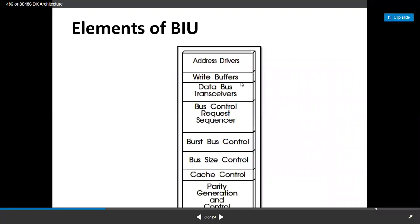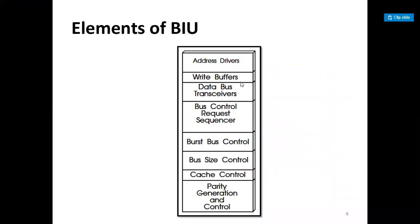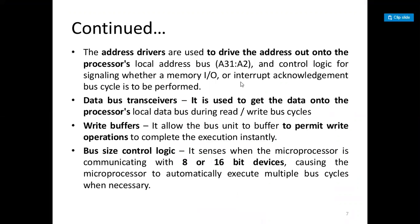The elements of the BIU are: address drivers, write buffer, data bus transceiver, bus control request sequencer, burst bus control, bus size control, cache control, and parity generation and control. The address drivers are used to drive the address out onto the processor local address bus. There are 32 address lines and control logic for signaling whether a memory, input/output, or interrupt acknowledgement bus cycle is to be performed.